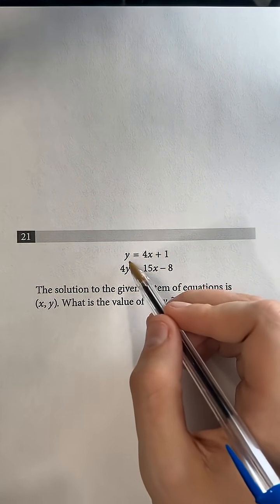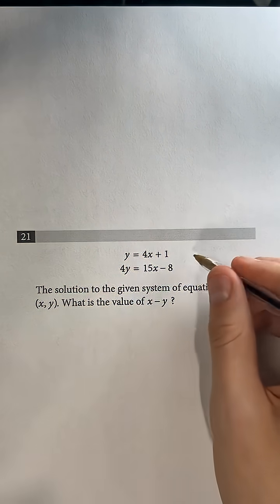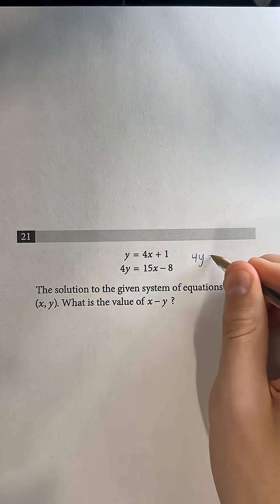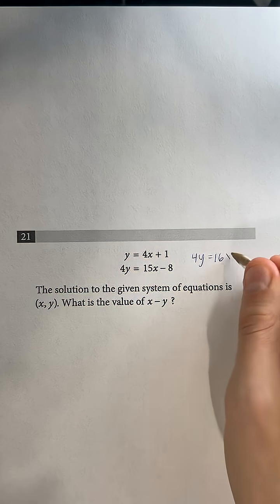Okay, so we can see that if we multiply this top one by 4, then this will become 4y equals 16x plus 4.